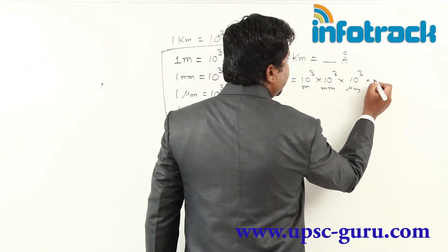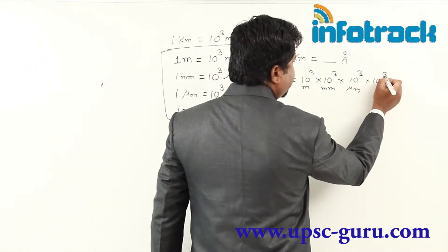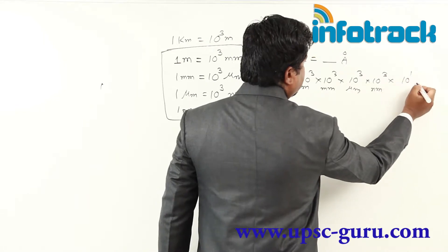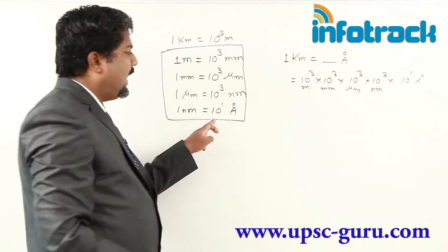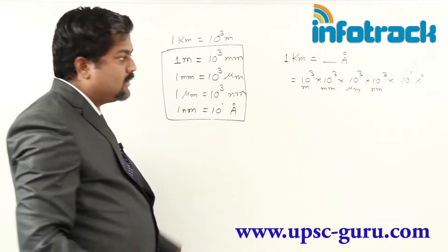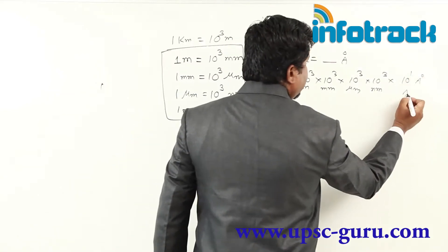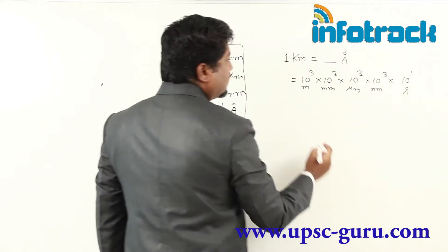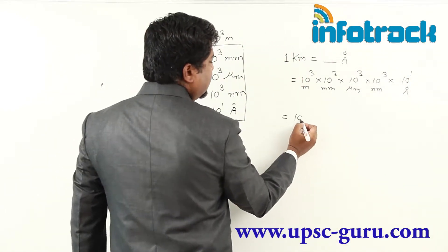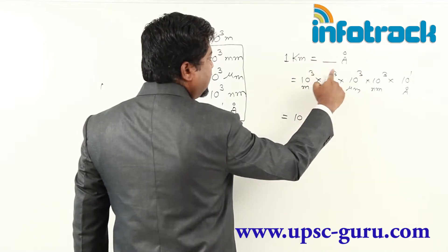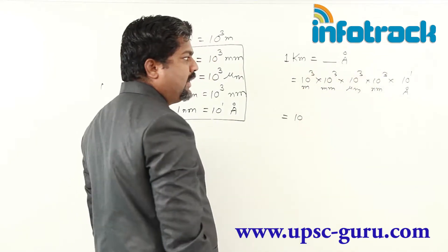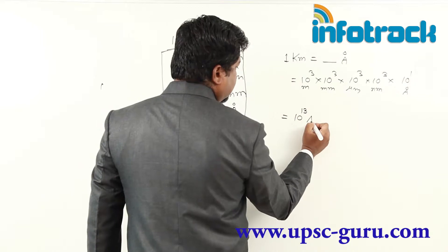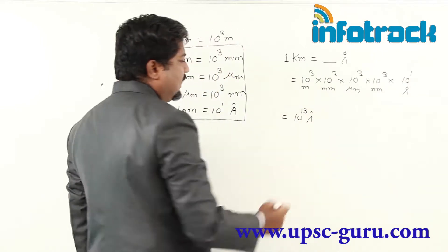Then into 10 raised to 3 nanometers, and into 10 raised to 1 angstrom. So we are getting the answer as 10 to the power of 3 plus 3 plus 3 plus 3, that is 12, plus 1, that is 13. So the answer is 10 raised to 13 angstroms.